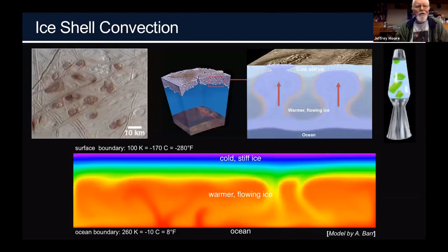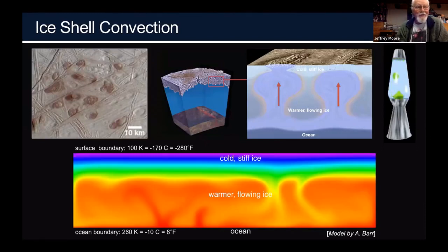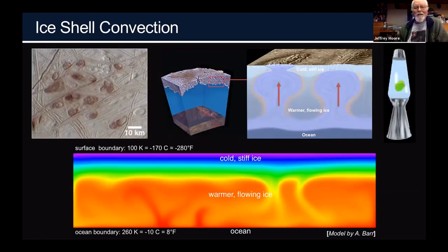The lenticulae features — spots and domes — strongly indicate that the lower four-fifths of the ice layer is convecting and ductile. Blobs of warm, less-dense material rise up much in the fashion of a lava lamp.